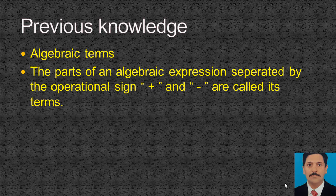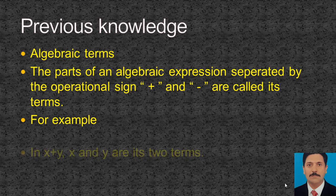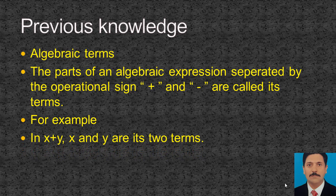Algebraic term: the parts of an algebraic expression separated by the operational signs plus and minus are called its terms. For example, in x plus y, x and y are its two terms.